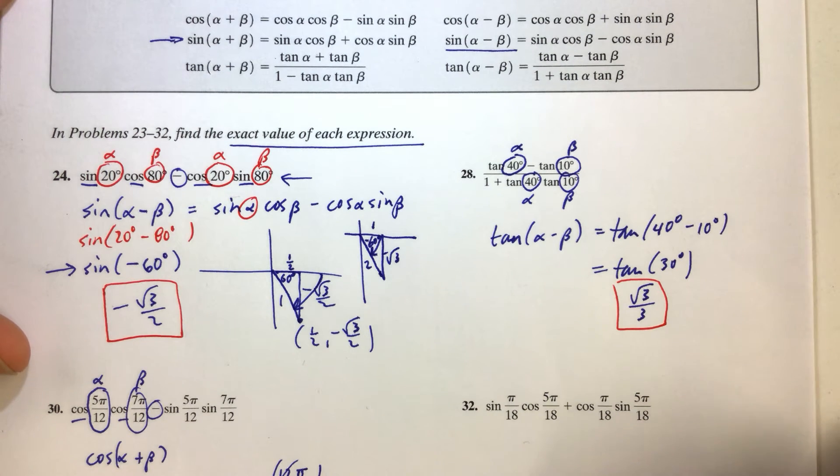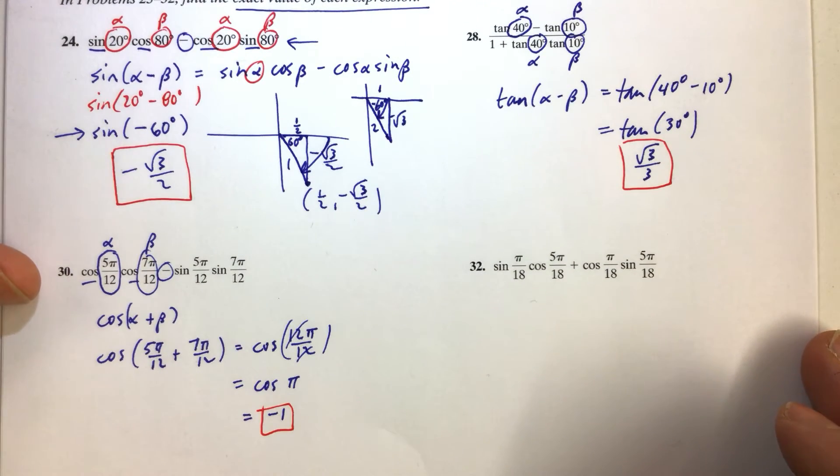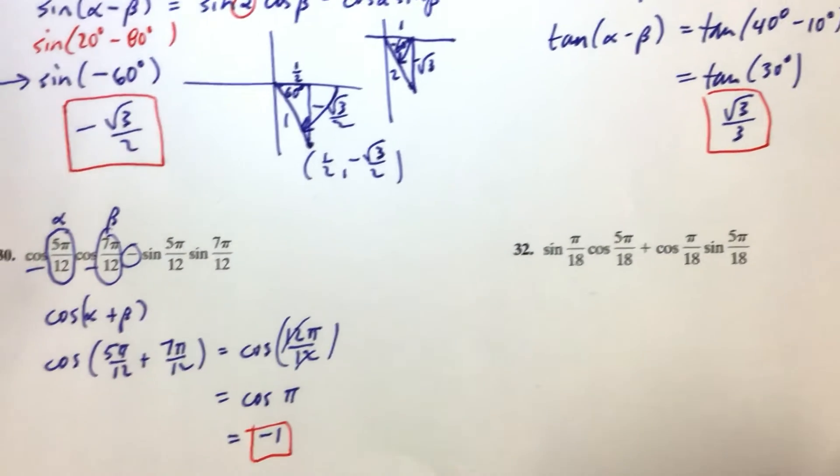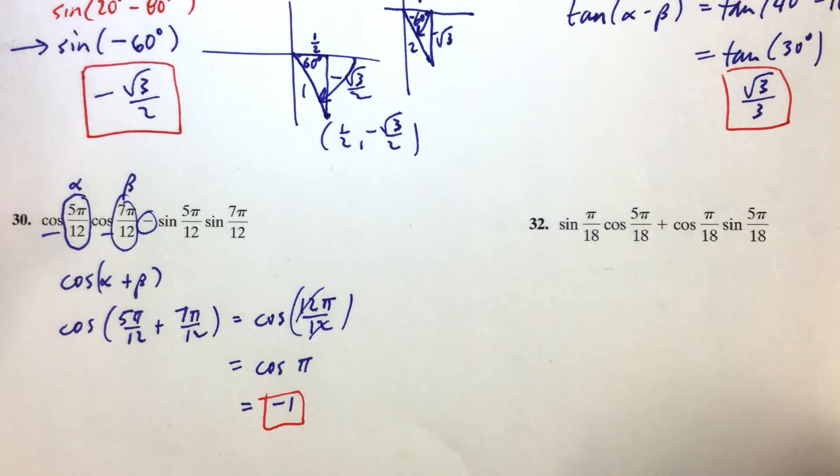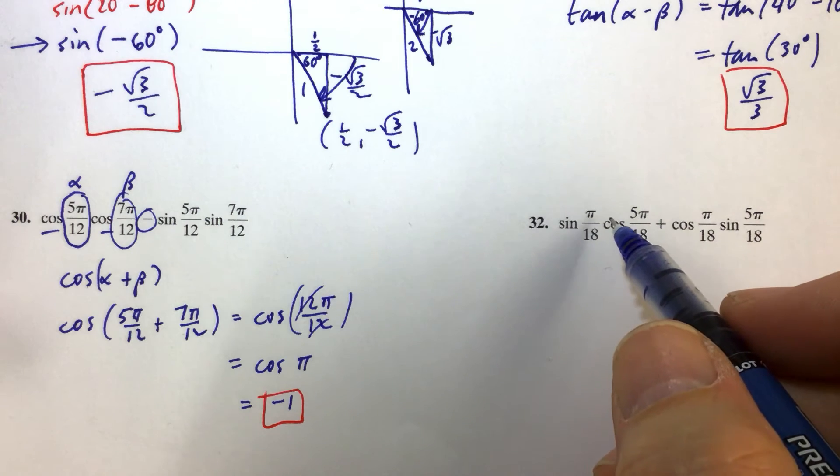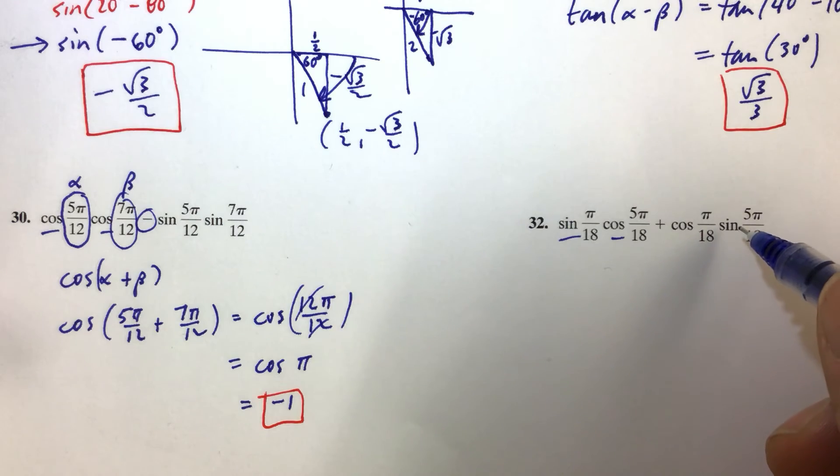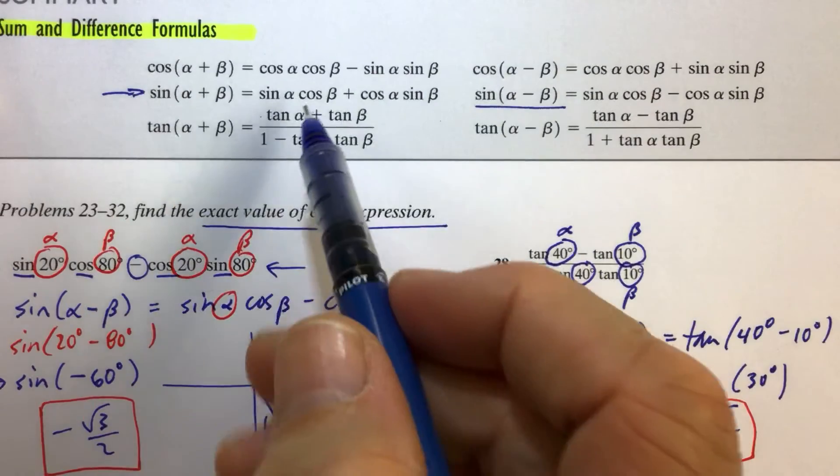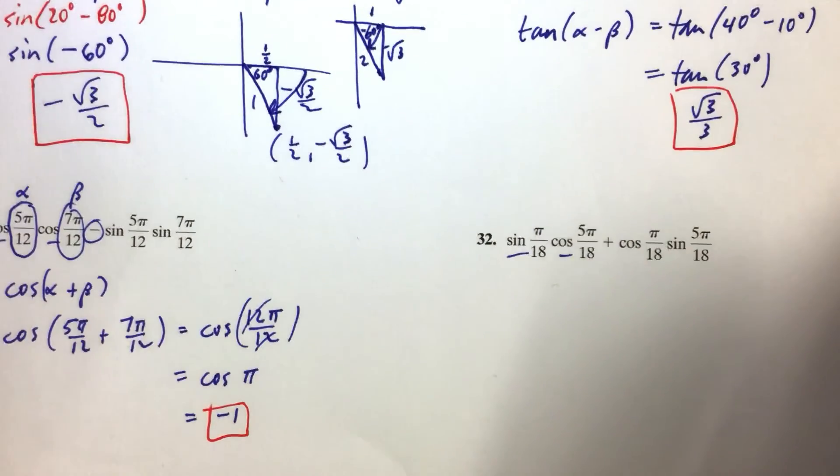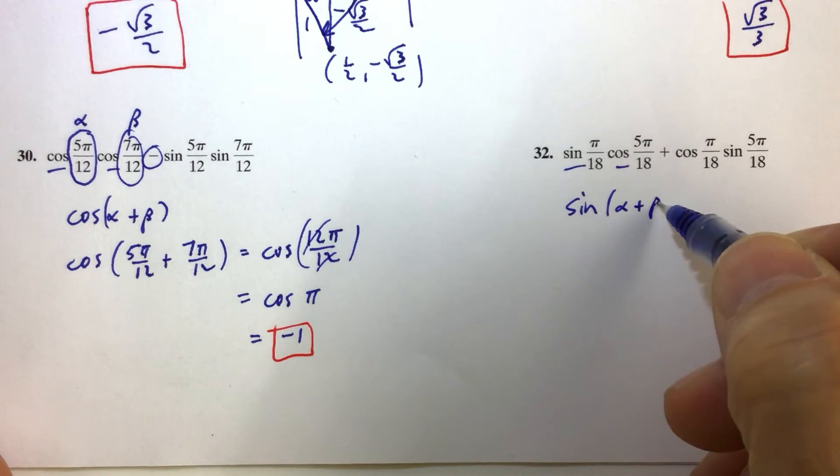And then for problem 32, we have sine cosine plus cosine sine, so that's this formula right here, sine of alpha plus beta. So all we have to do is write sine of alpha plus beta, that's our formula.